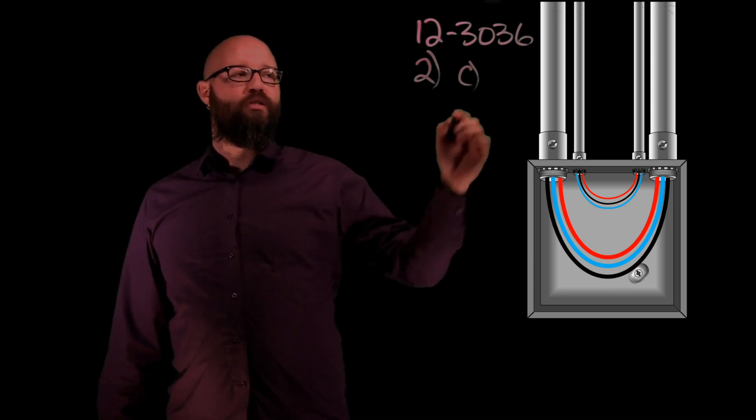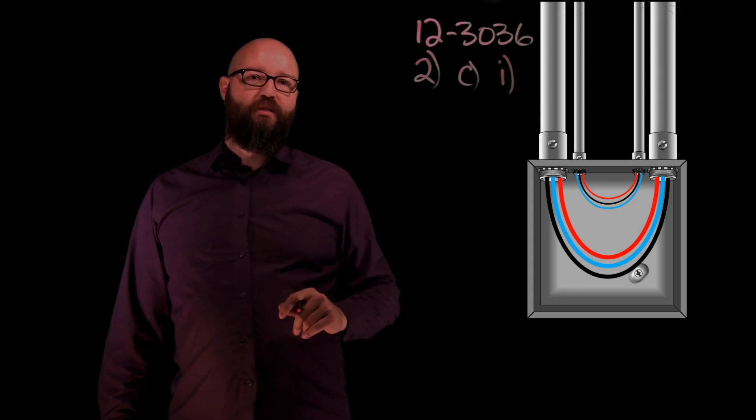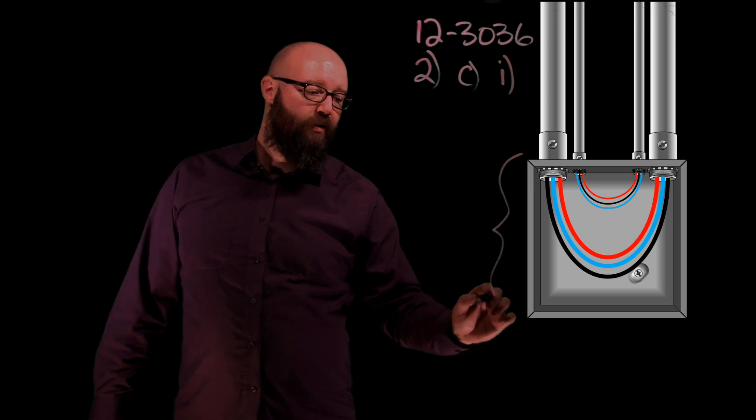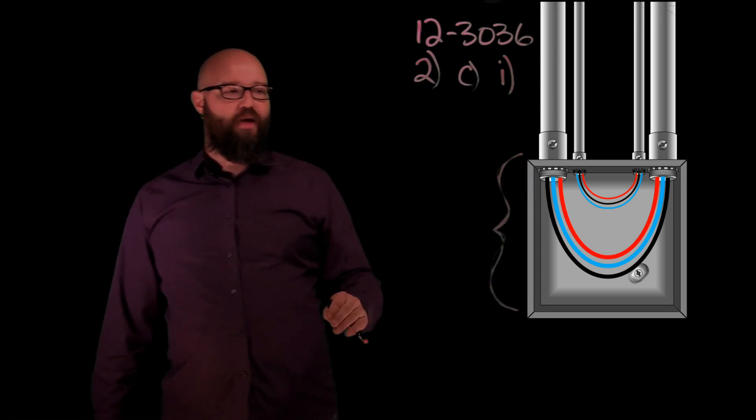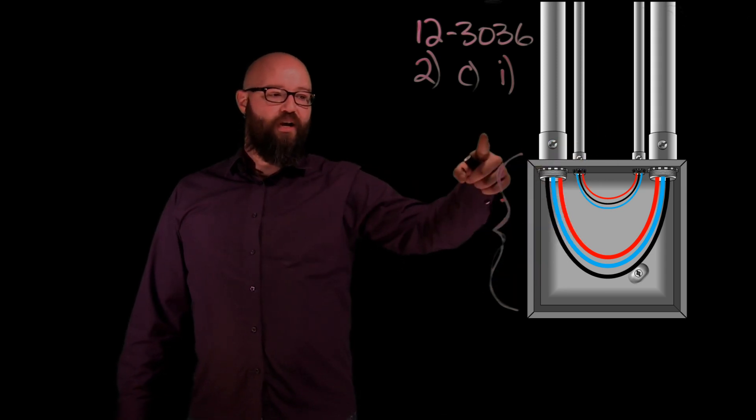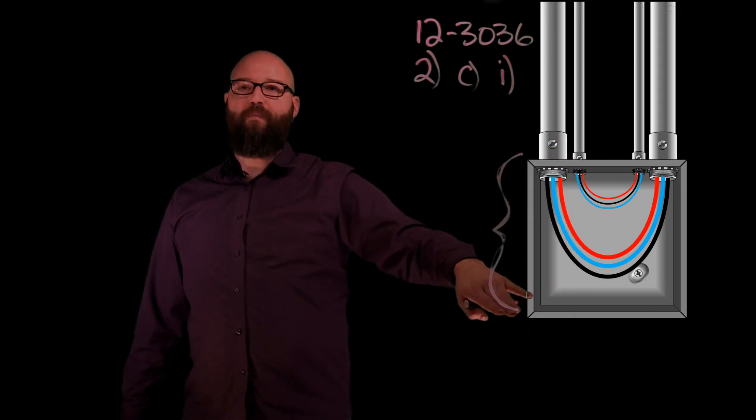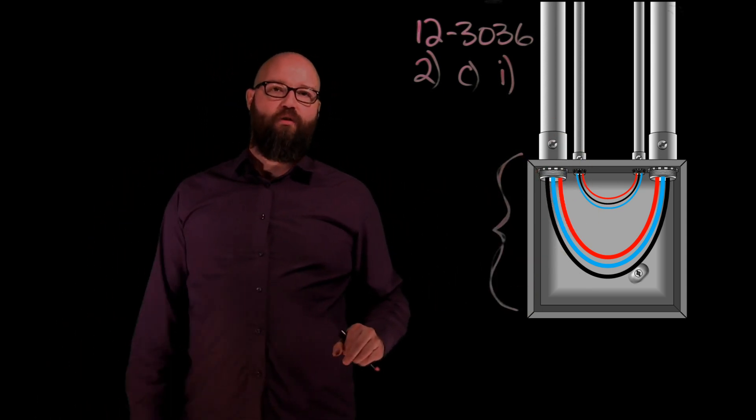But if we take a look at item 2C and specifically after the C item I, what we're actually going to be sizing is the dimension of this wall right here on our pull box. We want to make sure that we have enough distance between the wall that our conduits enter and the opposite wall so that we can observe proper bend radiuses for our conductors and we're not coming in too tight on those.